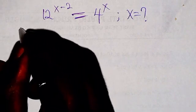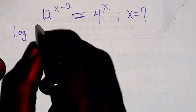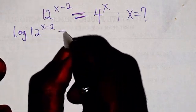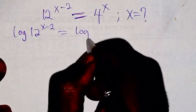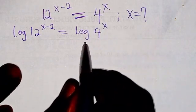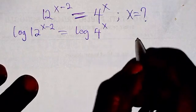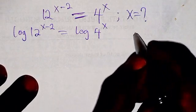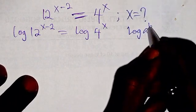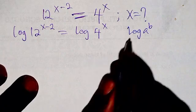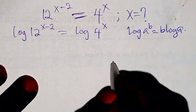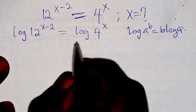We apply the logarithm with respect to base 10, and we're going to have log 12 to the power x minus 2 equals log 4 to the power x. From here we are going to use the law of logarithm that says if you have log a to the power of b, this b will come down and multiply log a.